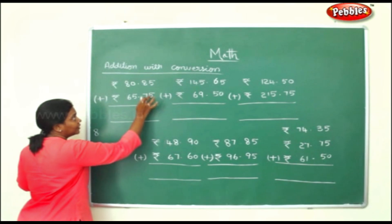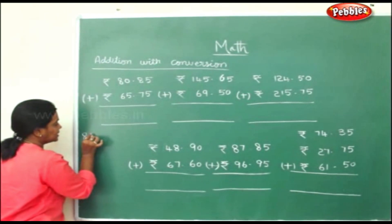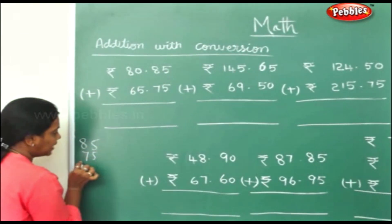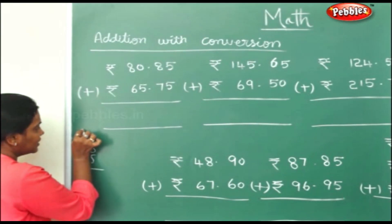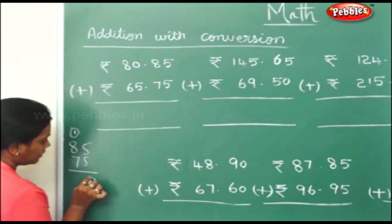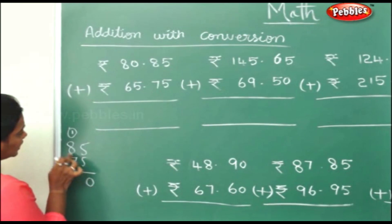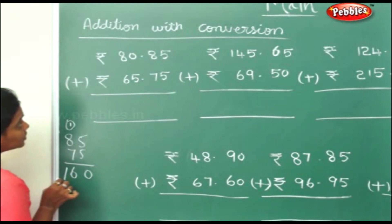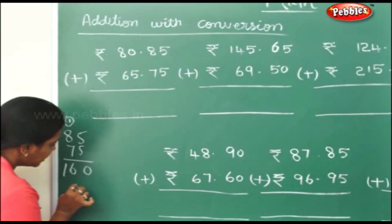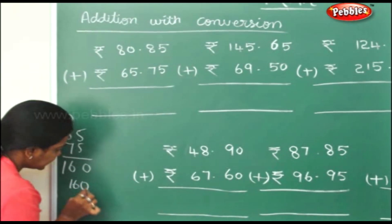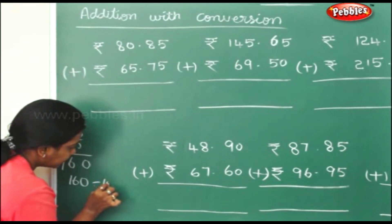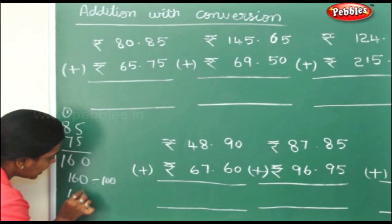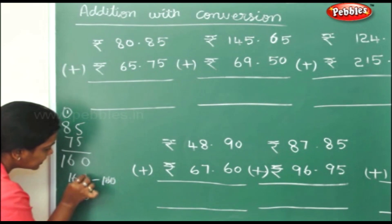Now I will first take the paise. 85 and 75 are the paise here. Add these both: 5 plus 5 is 10, and 9 plus 7 will be 16. So 160 paise. Divide 160 paise by 100 to convert it into rupees — it will be 1 rupee and 60 paise.